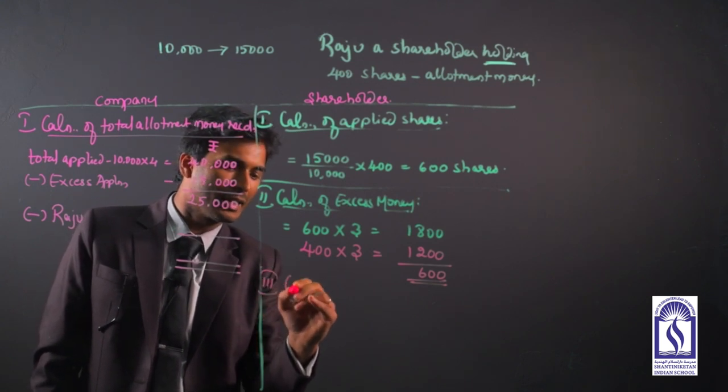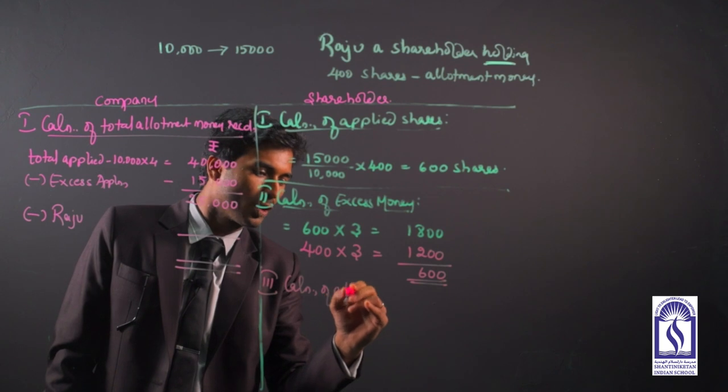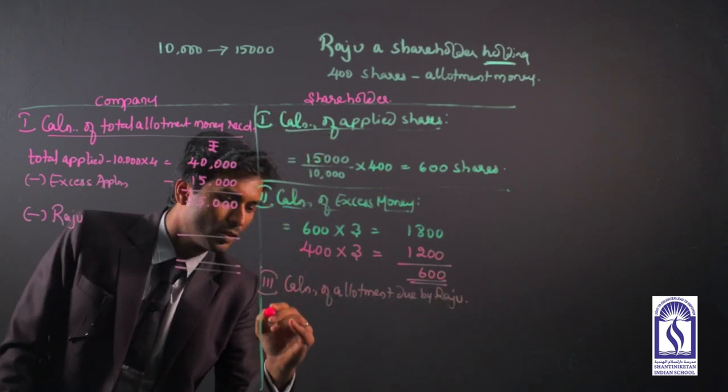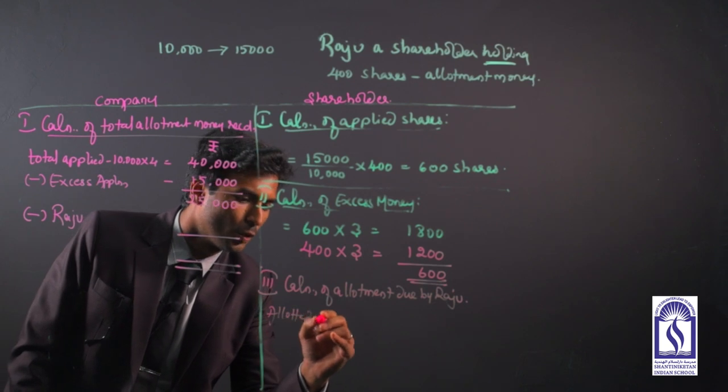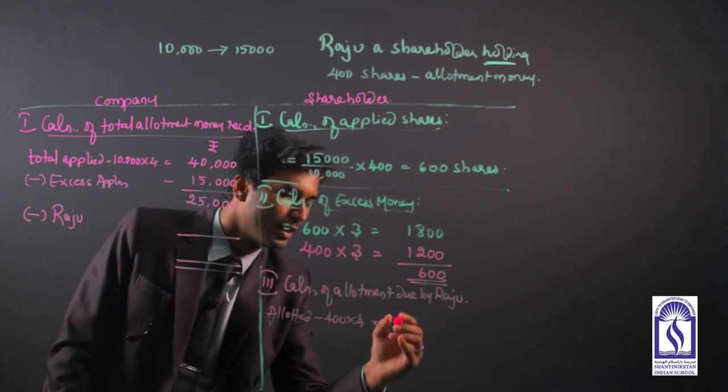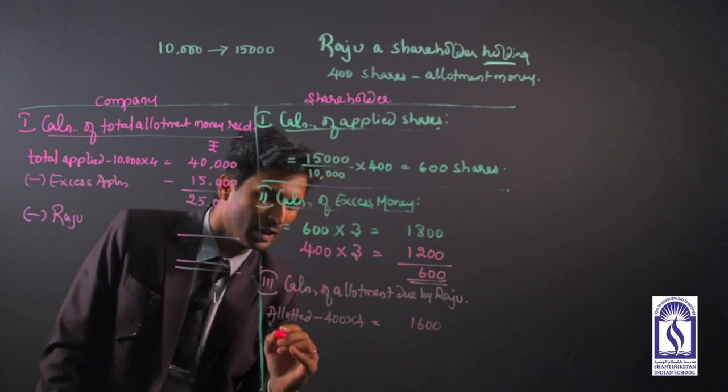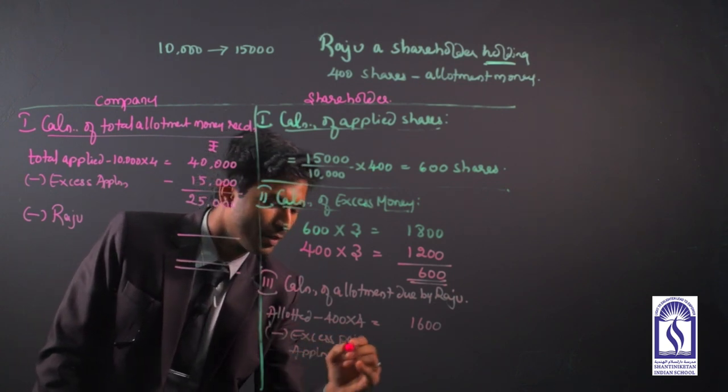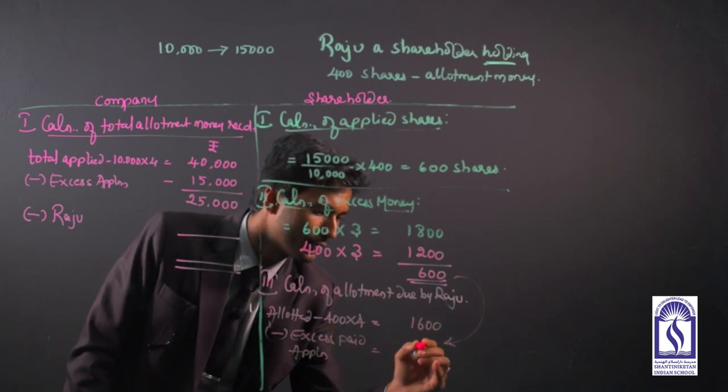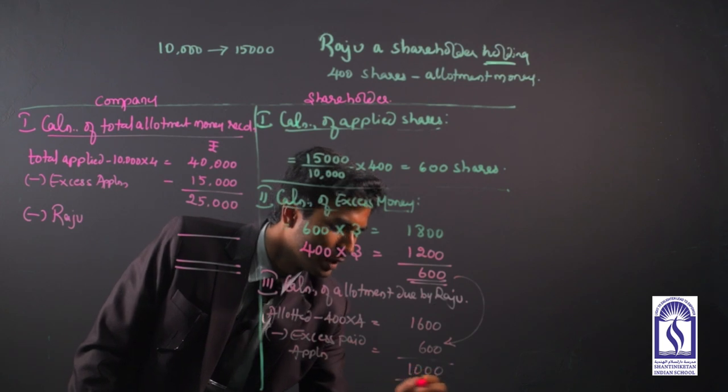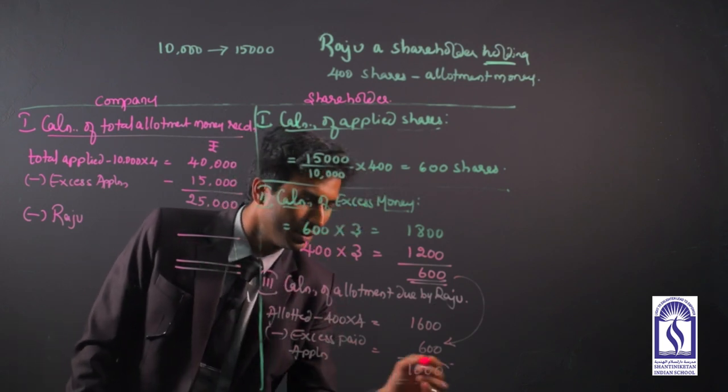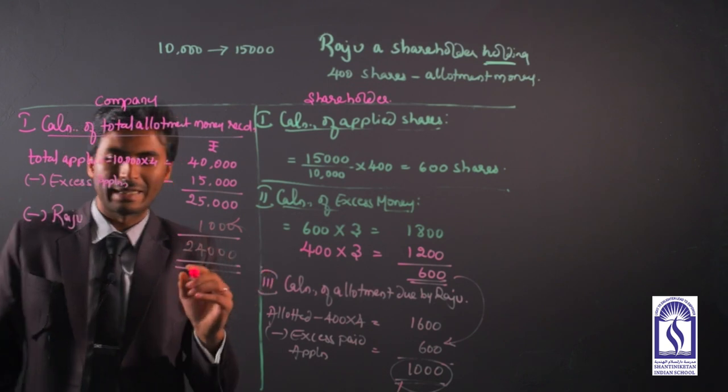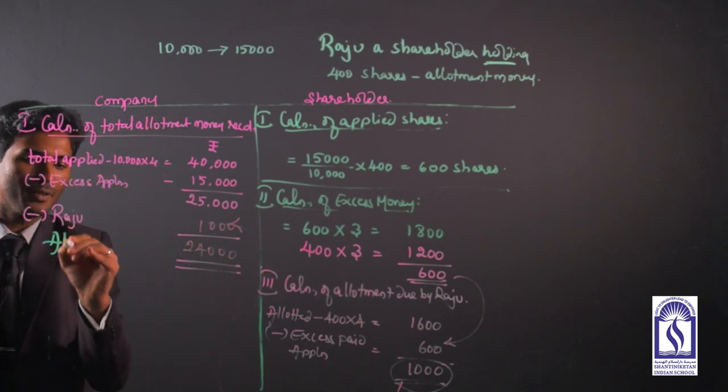And the last step that you need to do is calculation of allotment due by Raju. Now total allotted shares by Raju is 400 shares into 4 rupees is our installment, so it comes around 1,600 out of which excess paid by Raju during application, this 600 we have to deduct, then remaining is only 1,000 not paid by Raju. So this 1,000 we have to transfer here. 1,000, then 24,000 is the money received, allotment money received.